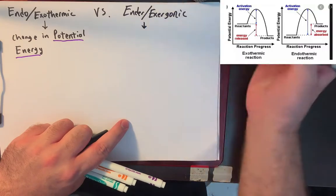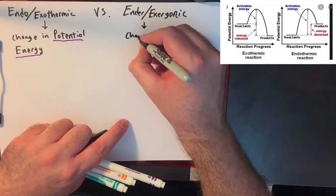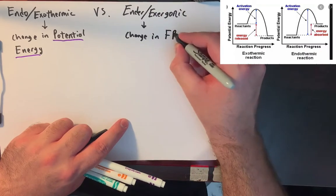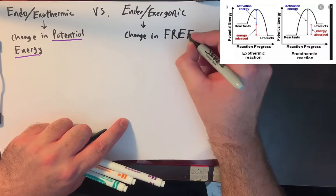In endergonic or exergonic, there is still a change and there's still energy flowing some way, but in this case it's a change in free energy.